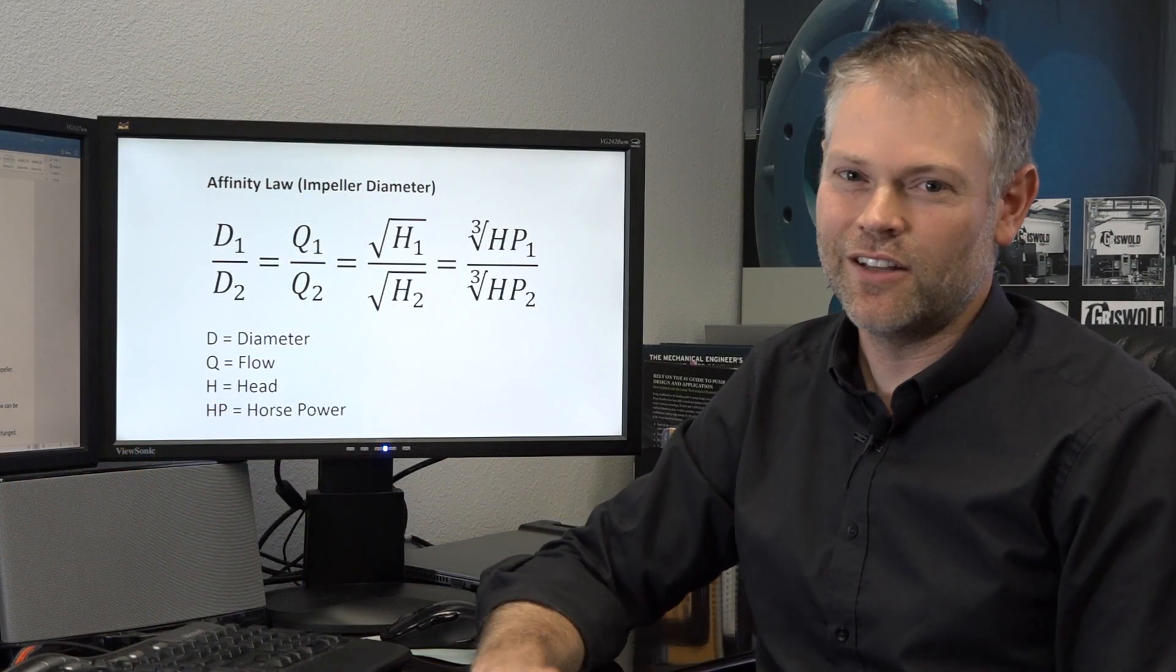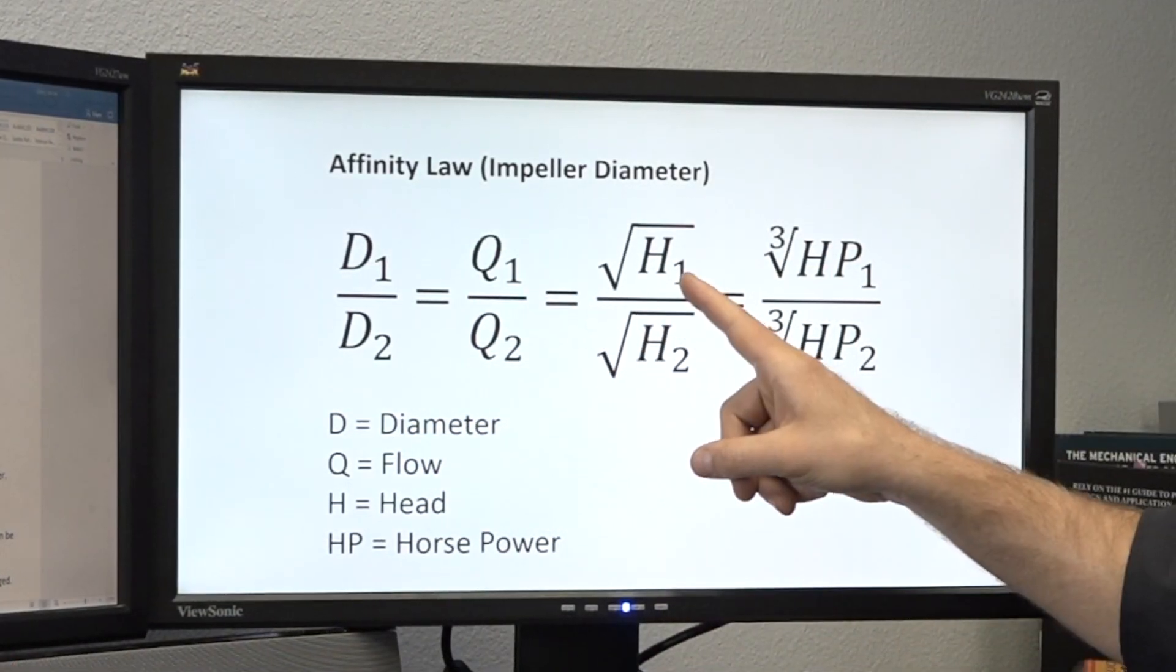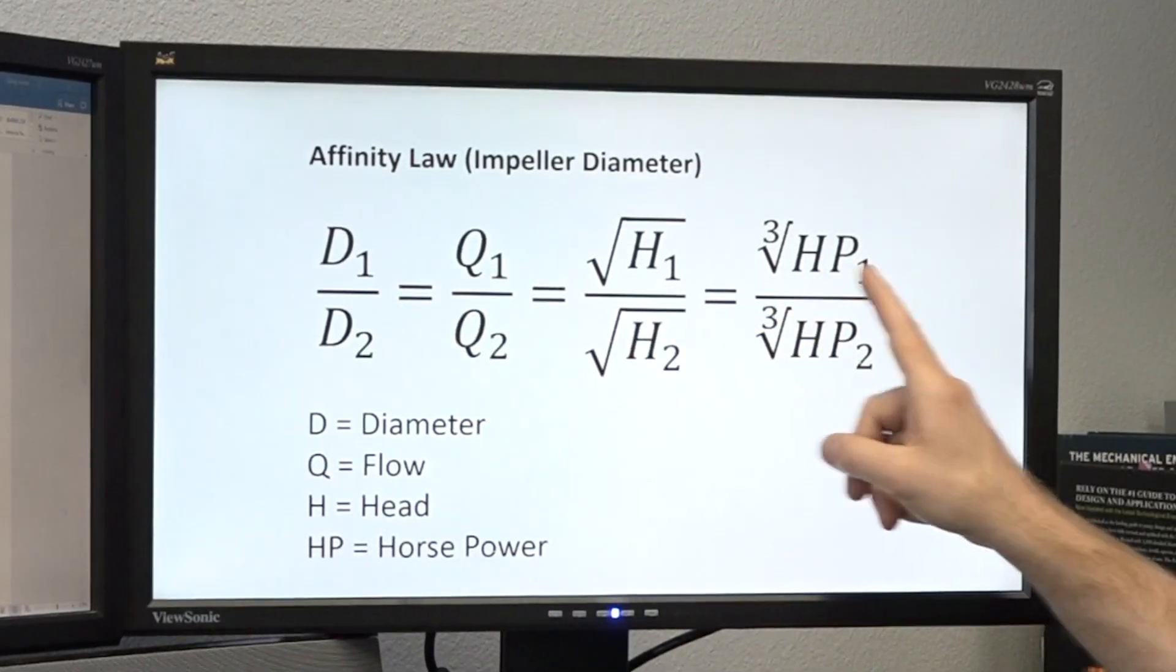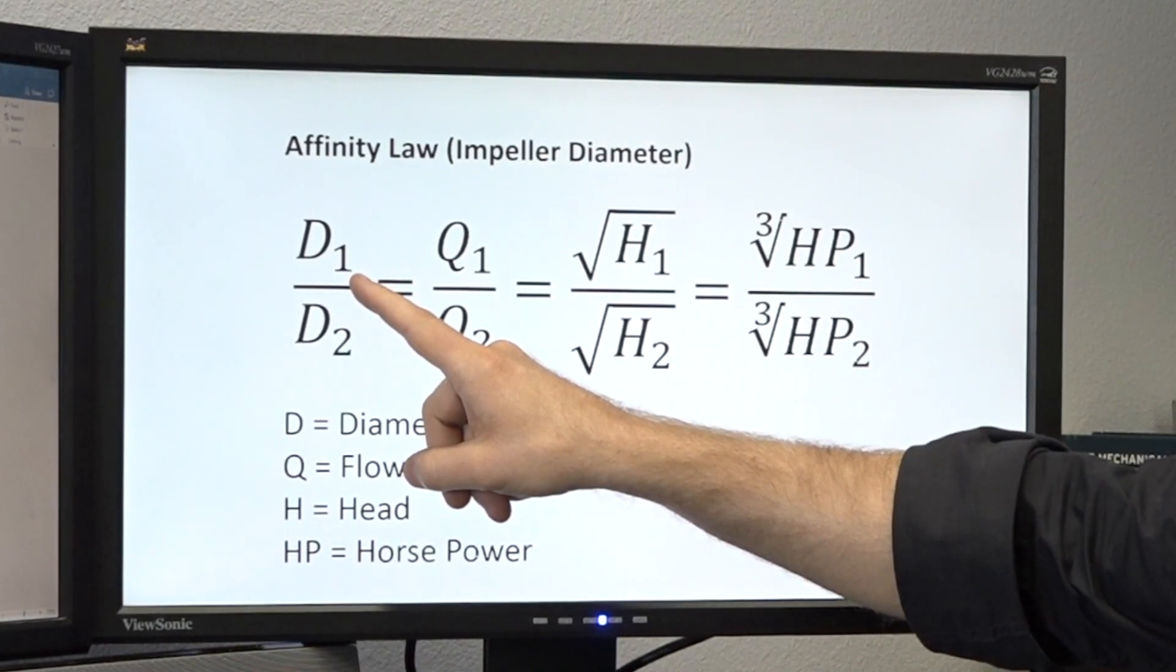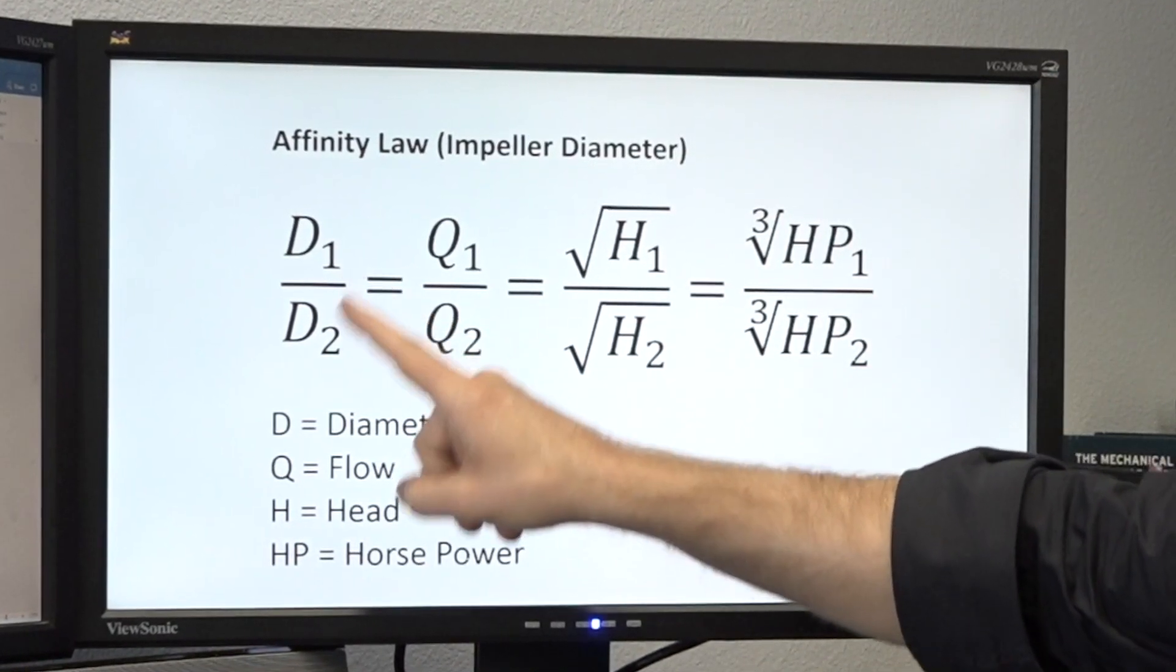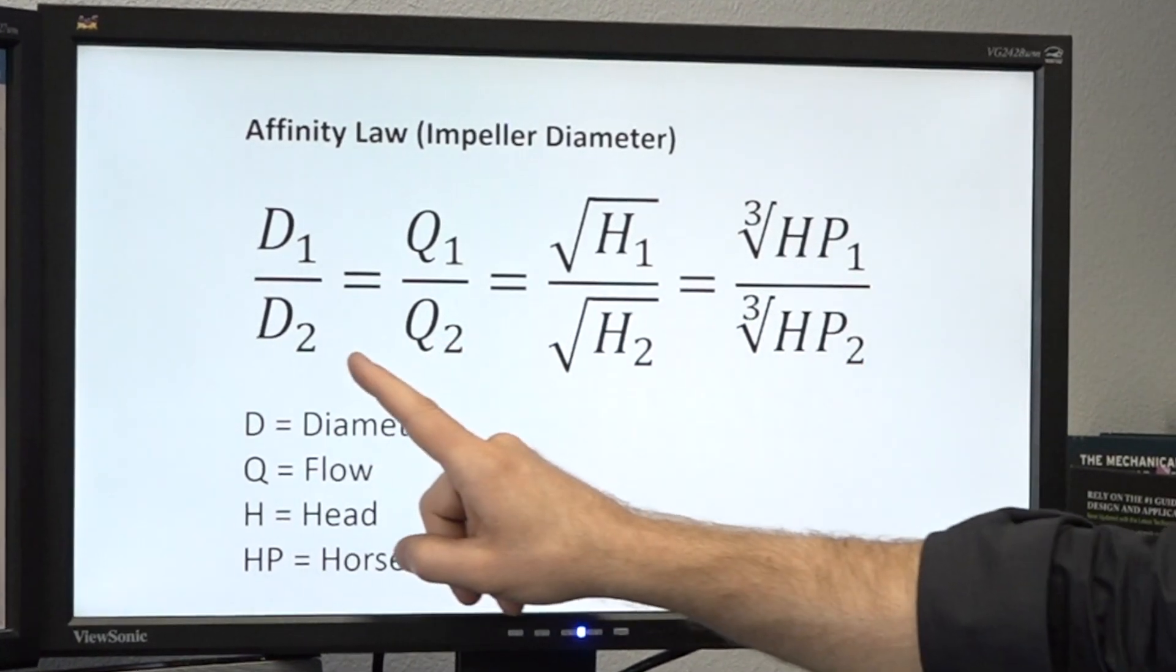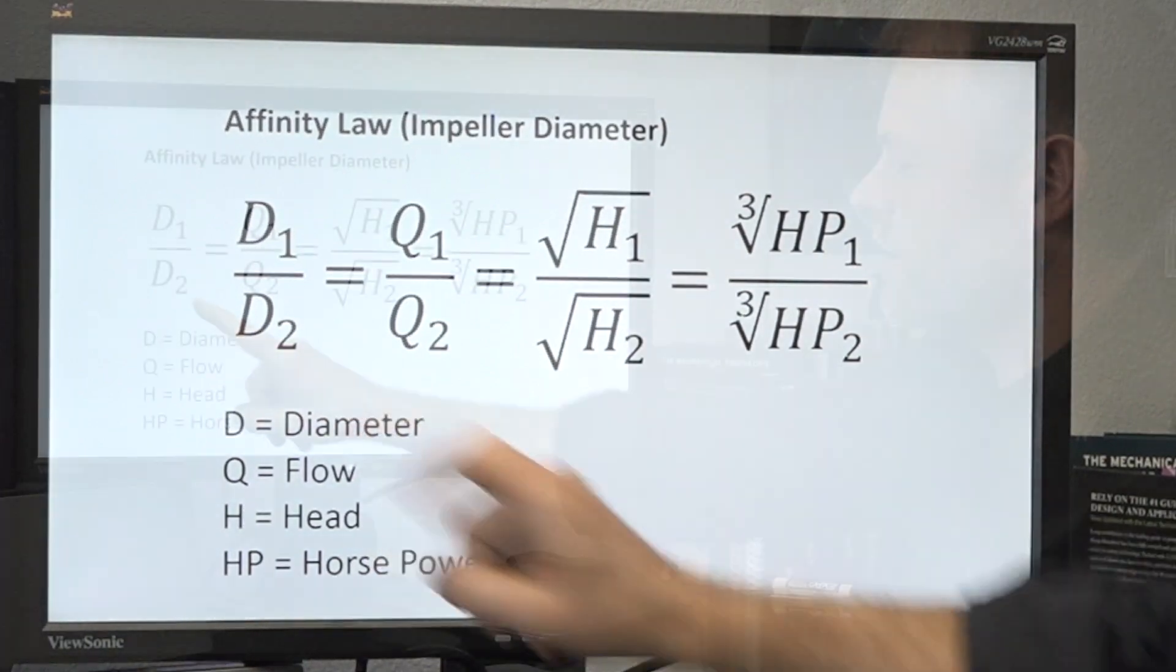So here's the affinity law. It's made up of four components: diameter, flow, head, and horsepower. And you'll notice across the top of the equation you have subscripts of one. That's your original pump's performance. Across the bottom you have subscripts of two, and that represents your future or estimated performance after the impeller diameter change.